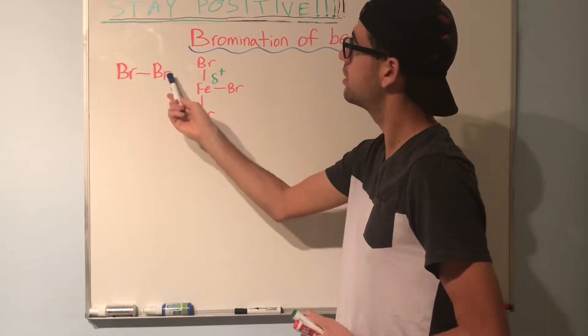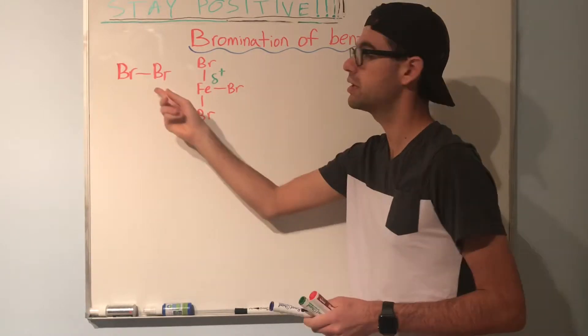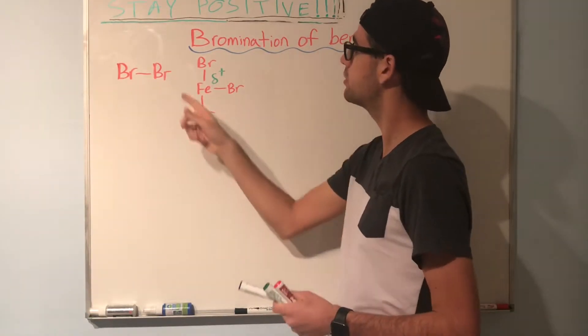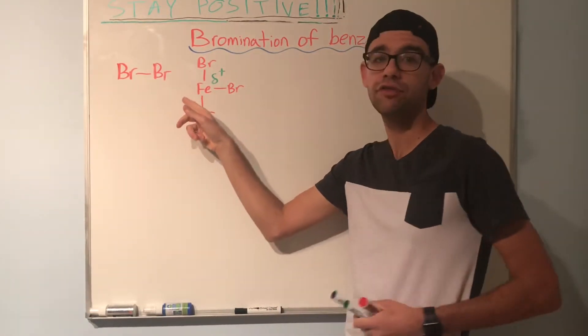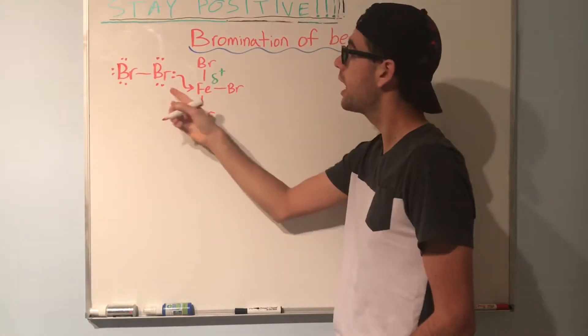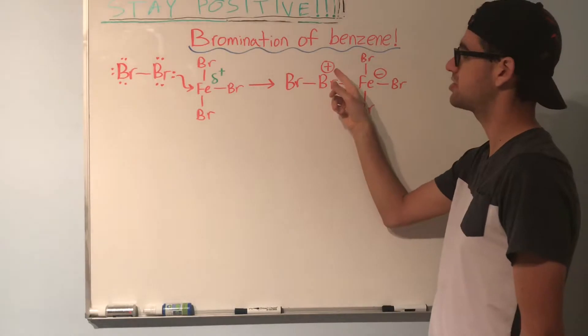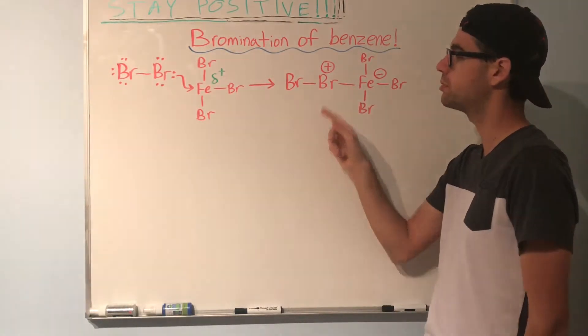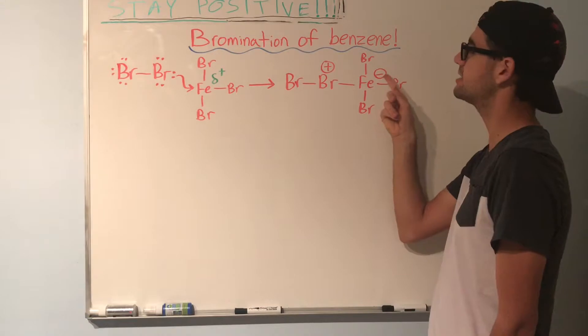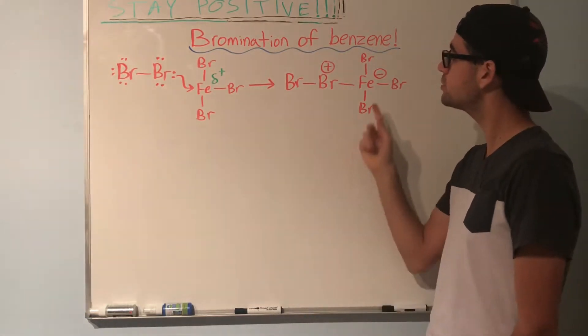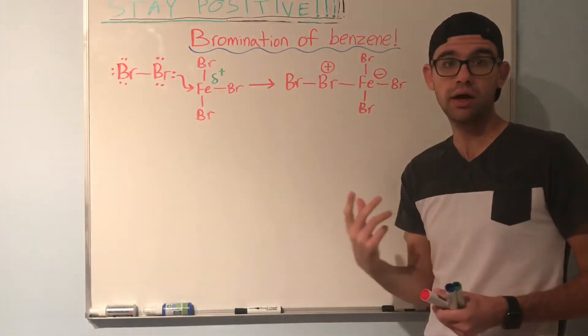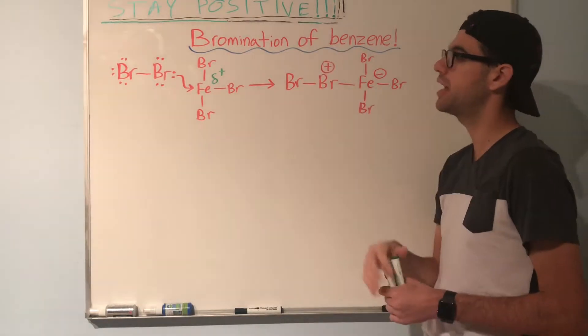What will happen next is this Br2 molecule, or one of the Brs in the Br2 molecule, is going to nucleophilically attack this electrophilic iron. That'll get us here. Notice that now this bromine has a positive charge because it takes on two bonds, and the iron atom has a negative charge. This will serve as our strong electrophile in the bromination reaction.